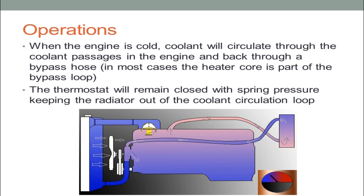When the engine is cold, coolant will circulate through the coolant passages in the engine and back through a bypass hose. In most cases, the heater core is part of the bypass loop. The thermostat will remain closed with spring pressure, keeping the radiator out of the coolant circulation loop.